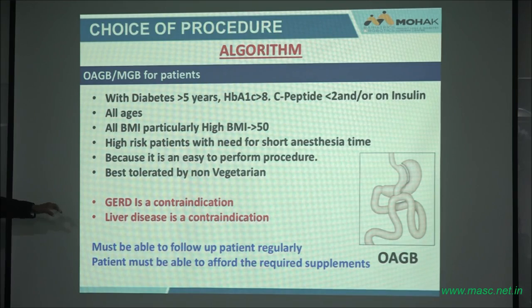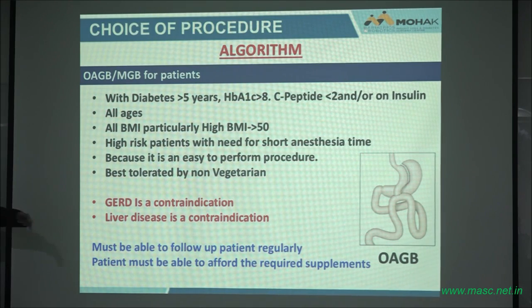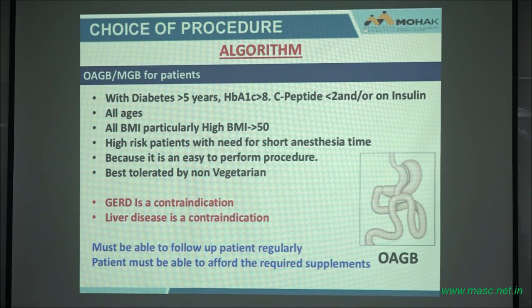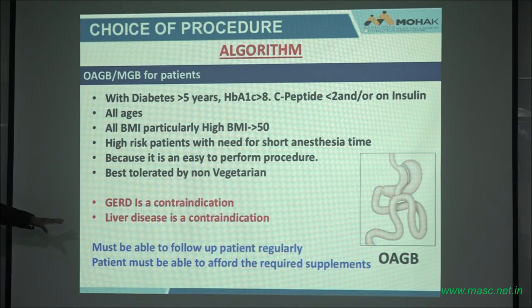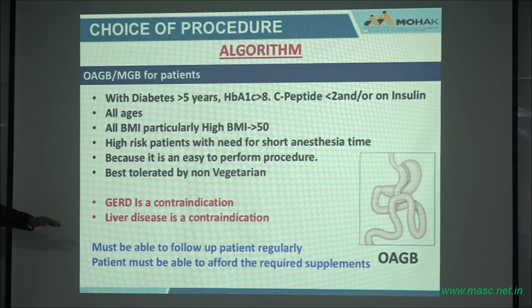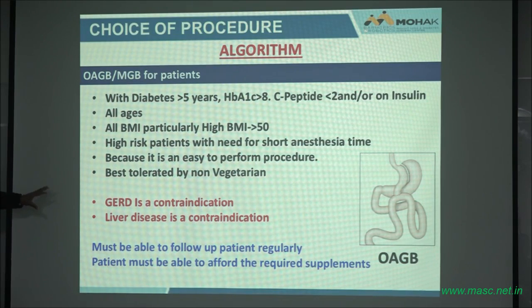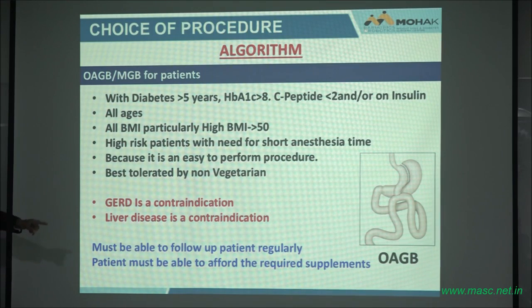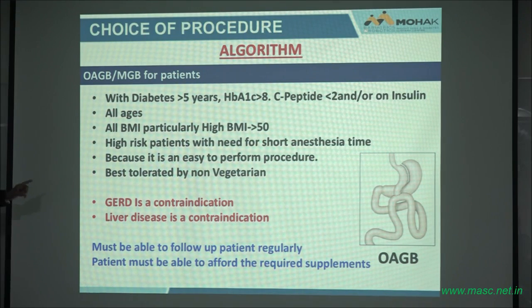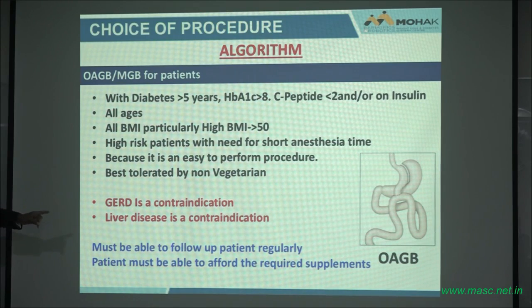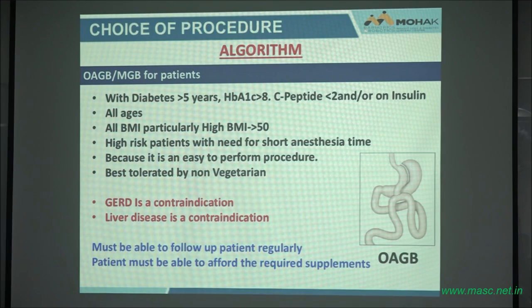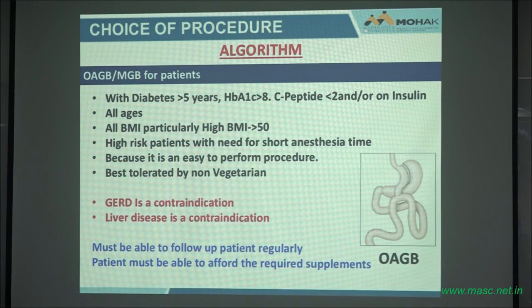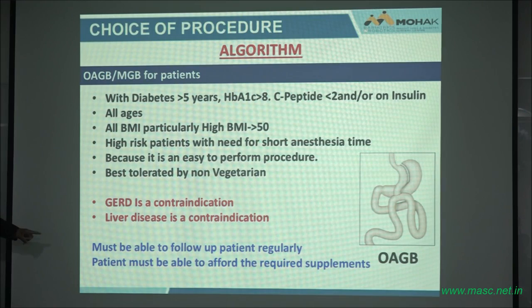We think there may be GERD and bile reflux with MGB — we don't have the exact data, but there are a lot of cases being reversed, so we need to study that. We're seeing patients coming back with liver disease, liver failure, with ascites from protein malnutrition. So you have to choose the patients carefully. You must be able to follow these patients. If you are not going to see that patient and follow them, don't give them a procedure where 20% might have a protein deficiency.